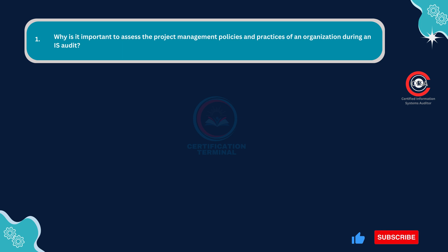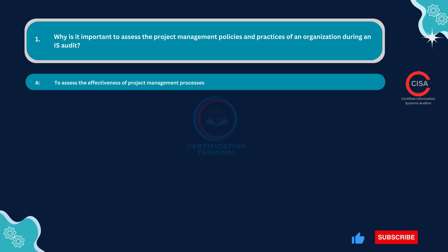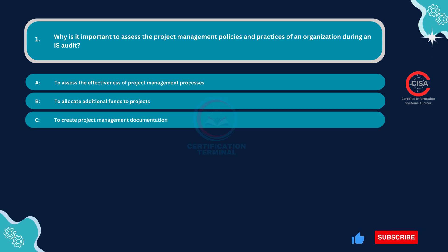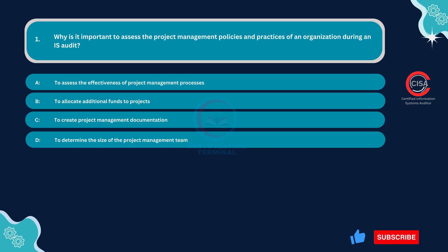Question number nine: What should be the primary focus of an IS auditor in an organization where an IT security baseline has been defined? Option A: Implementation. Option B: Compliance. Option C: Sufficiency. Option D: Documentation. The correct answer is Option B: Compliance.